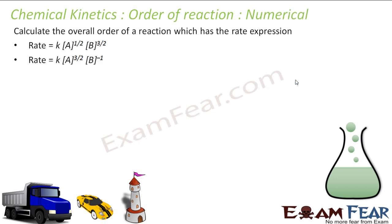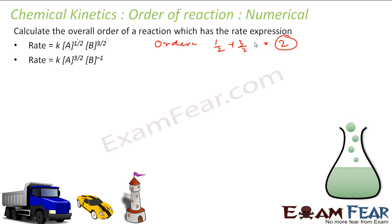Let's take some numericals to understand order of reaction more clearly. Given a rate expression with powers 1/2 and 3/2 for the two reactants, the overall order is x + y = 1/2 + 3/2 = 2. So the order of this reaction is 2.